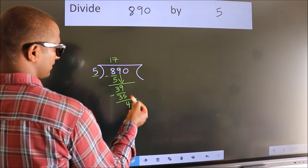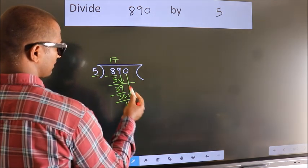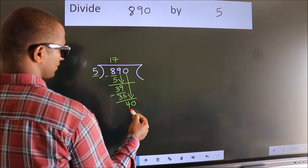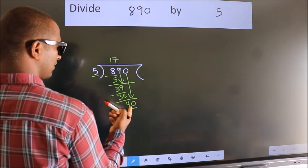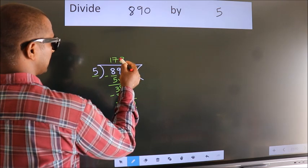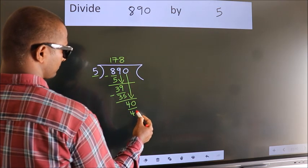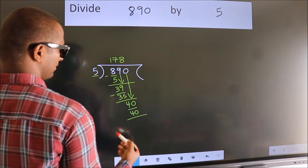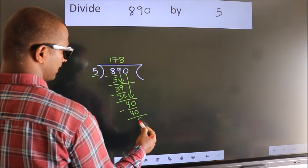After this, bring down the beside number. So 0 down. So 40. When do we get 40 in the 5 table? 5 eights 40. Now we subtract. We get 0.